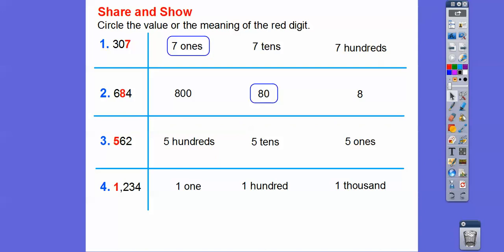562. That's in the hundreds spot. So that would be five hundreds. 1,234. The one is in the thousands spot. So it's 1,000 right there.